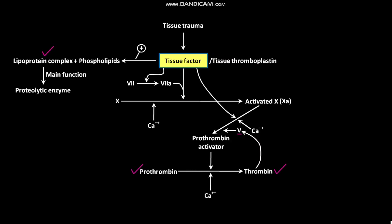Thus, in the final prothrombin activator complex, activated factor X is the actual protease that causes splitting of prothrombin to form thrombin. Activated factor V greatly accelerates the protease activity of activated factor X, and platelet phospholipids act as a vehicle that further accelerates the process.